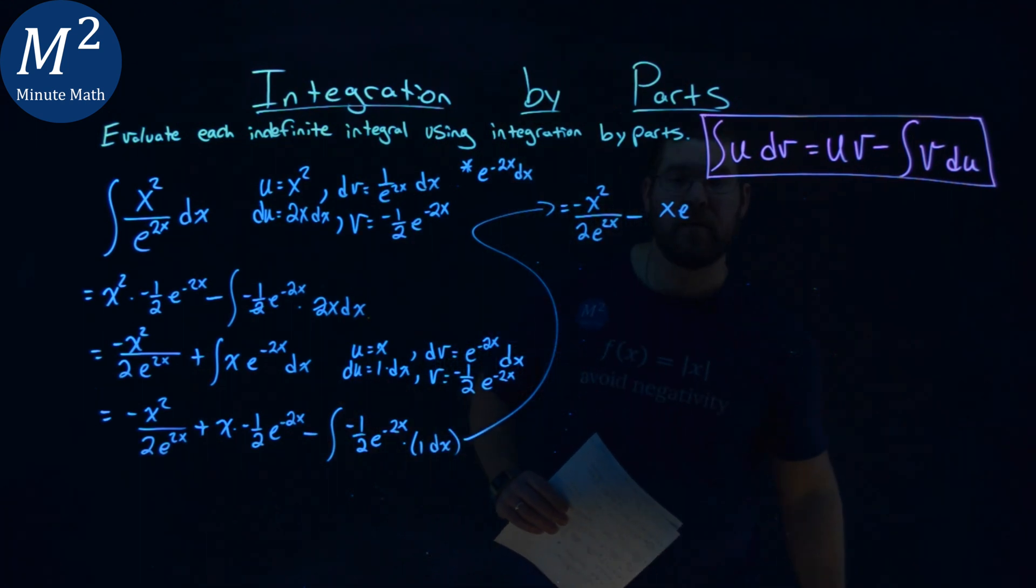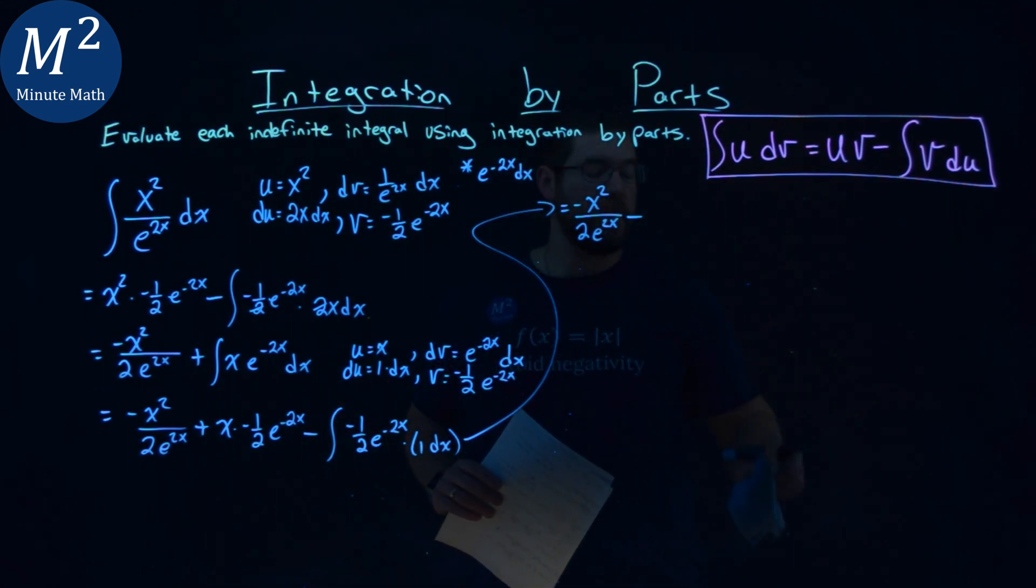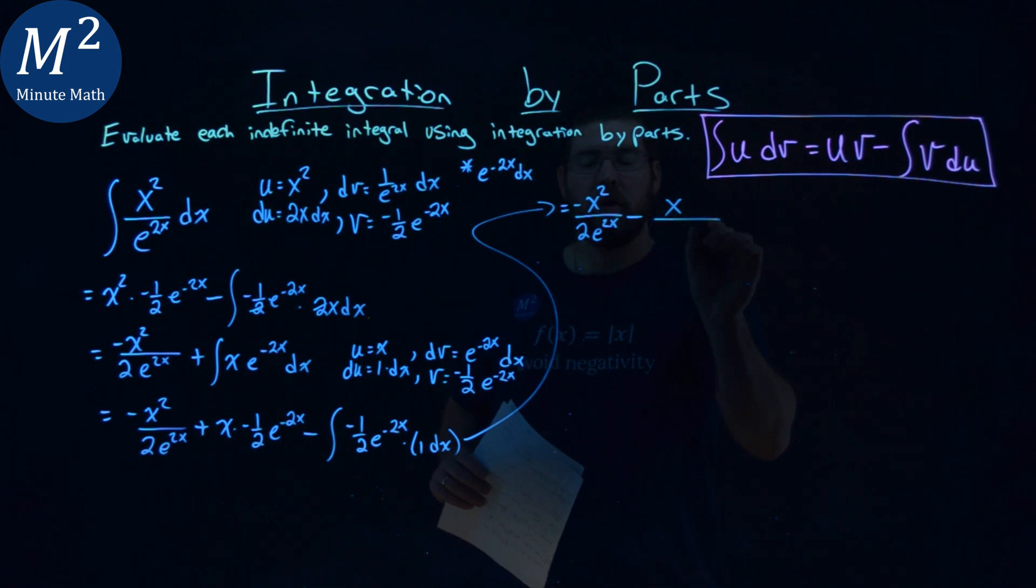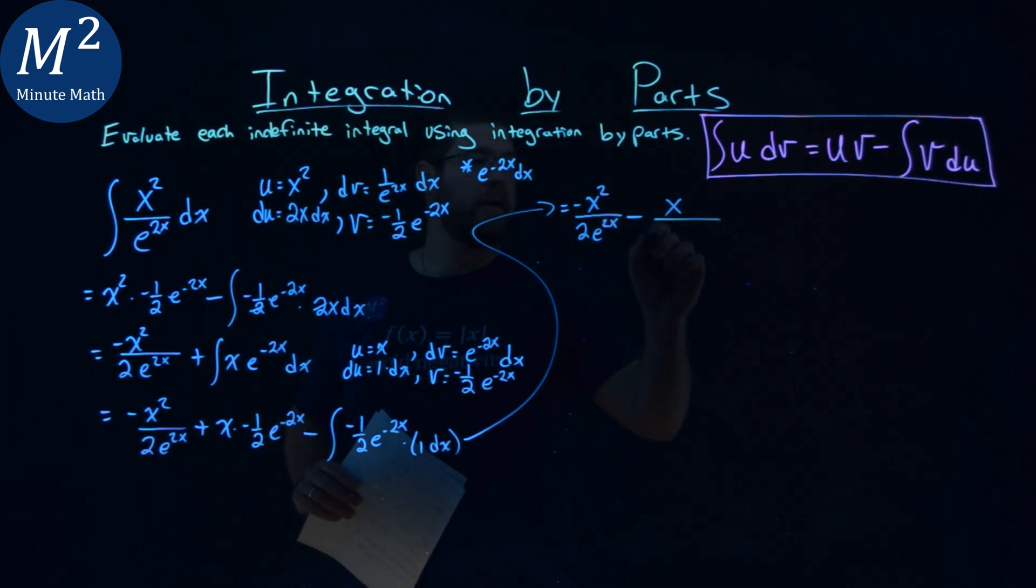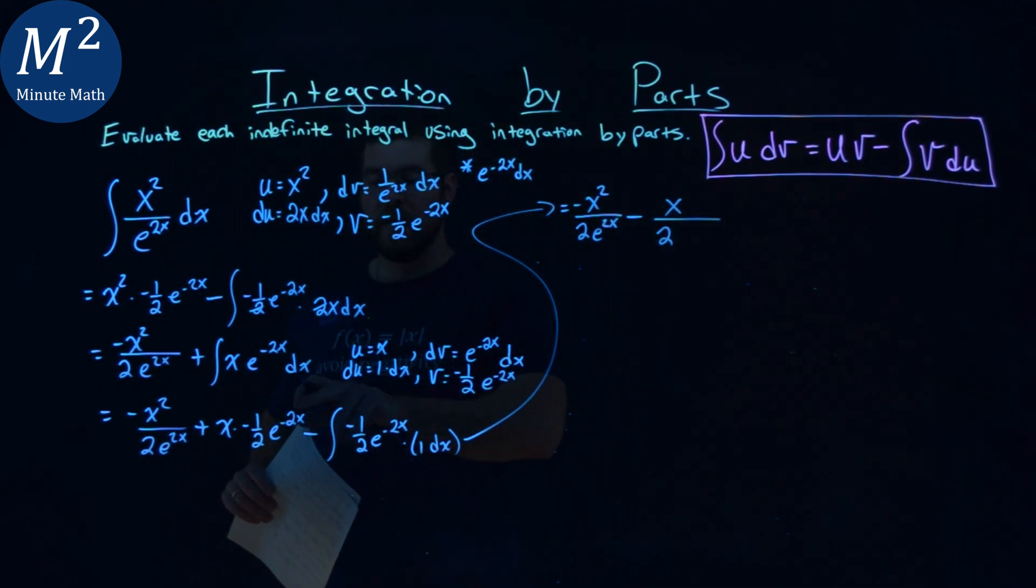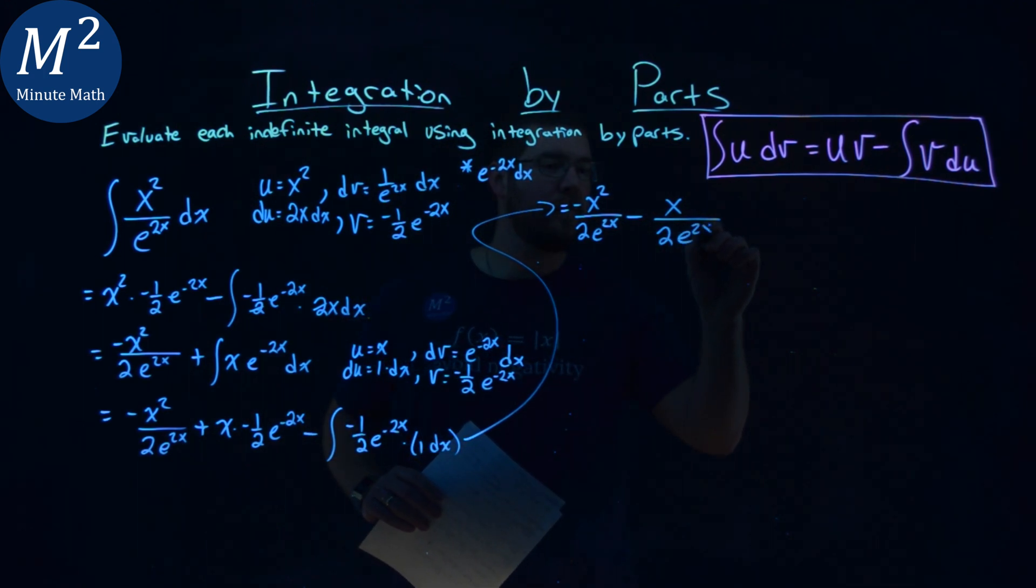e, oh sorry, e is going to go to the denominator in a second. You'll see. So we have an x here over the 2, which stays in the denominator, and we bring the e to the negative 2x power to the denominator, e to the positive 2x power.